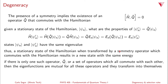A stationary state of the Hamiltonian that's transformed by a symmetry operator which commutes with the Hamiltonian results in a new state with the same energy. If there's only one such operator Q, or a set of operators all of which commute with each other, then the eigenfunctions are all mutual for these operators and they transform into themselves. The transformed eigenfunction Q applied to psi sub n is also an eigenfunction of Q and all operators that mutually commute with Q and the Hamiltonian.